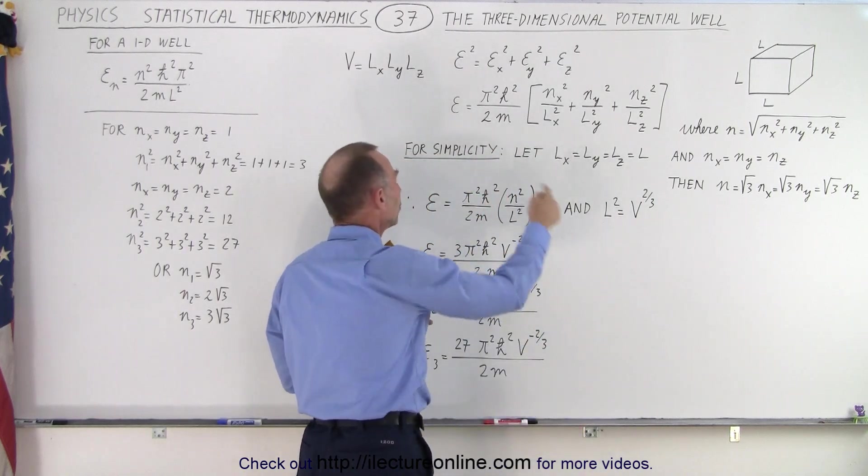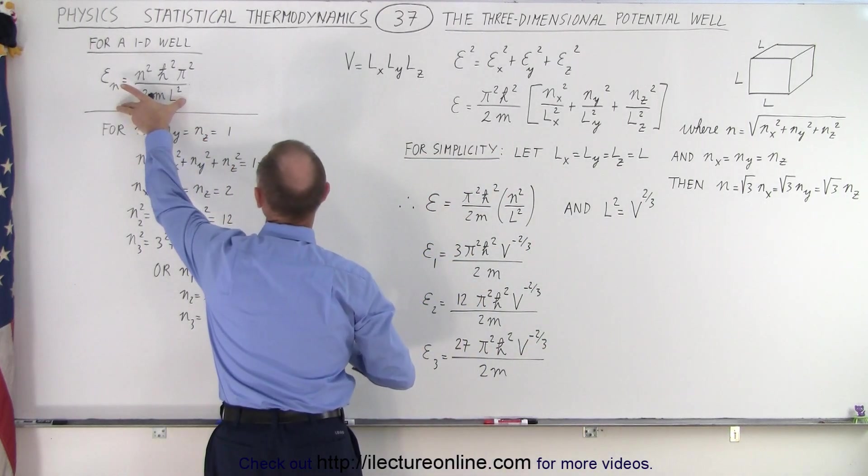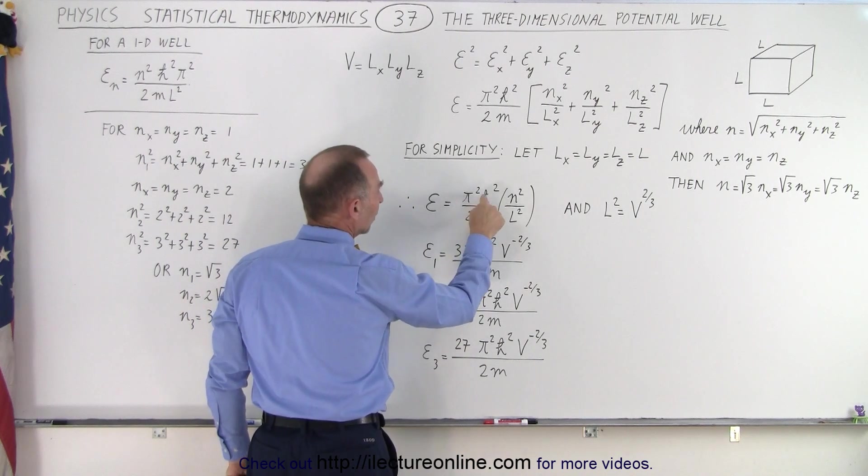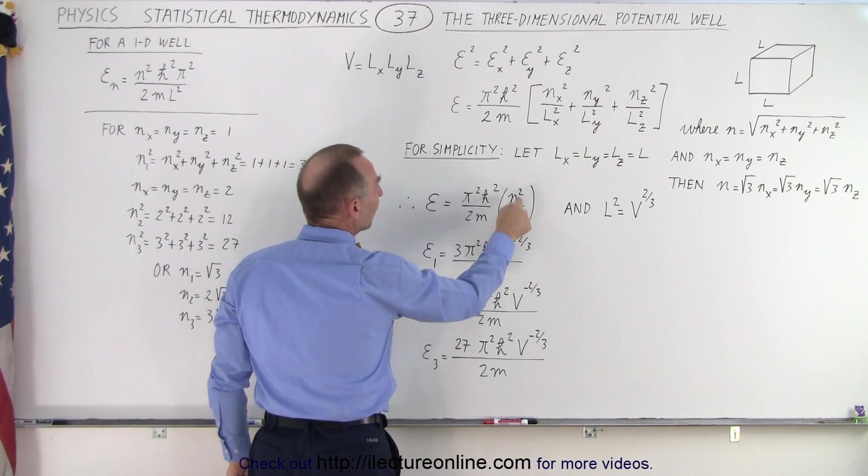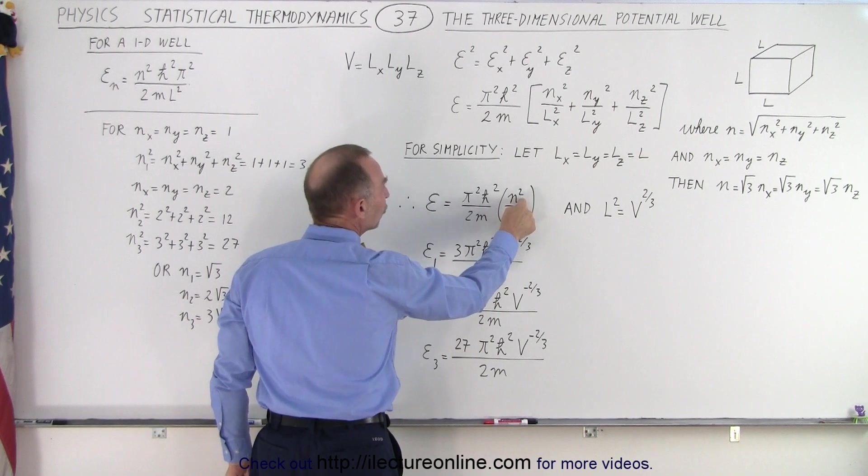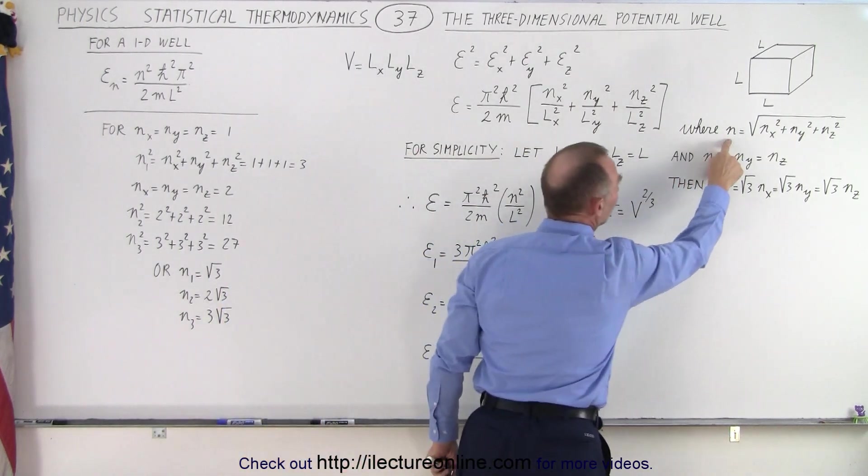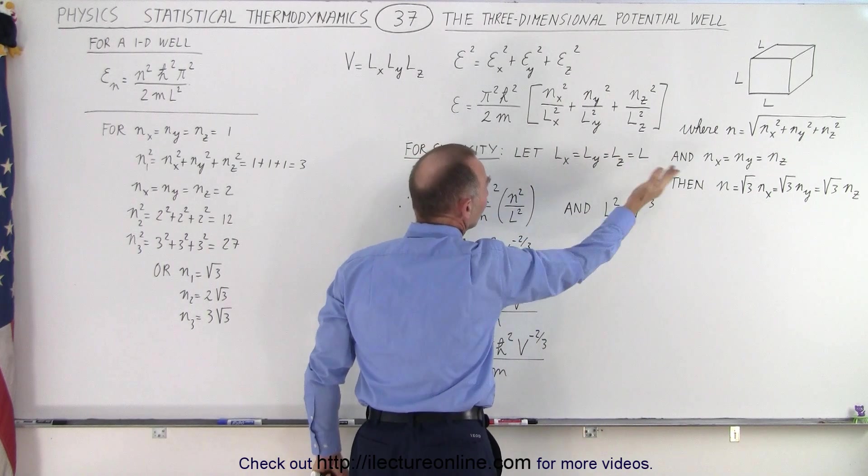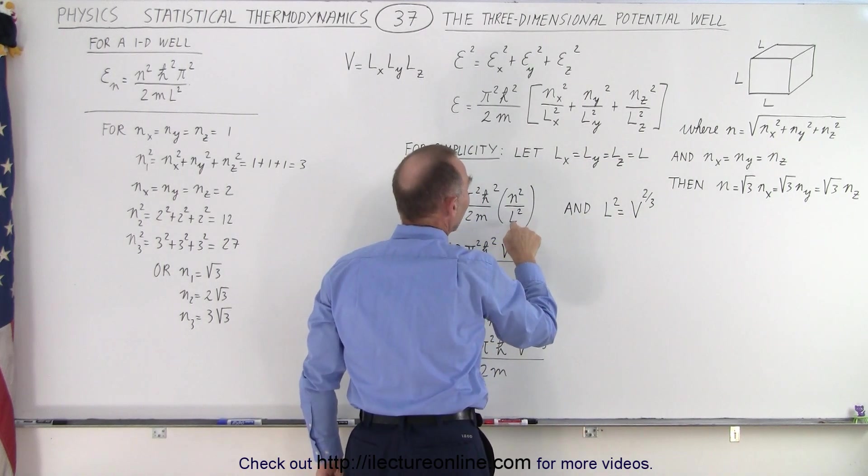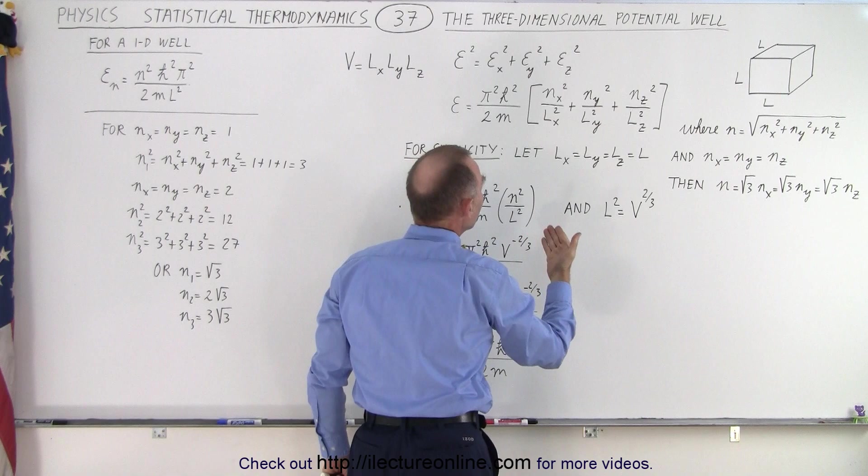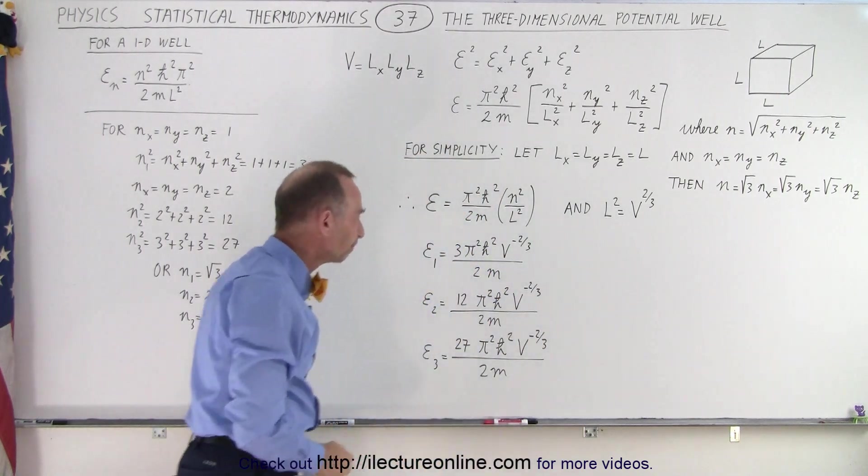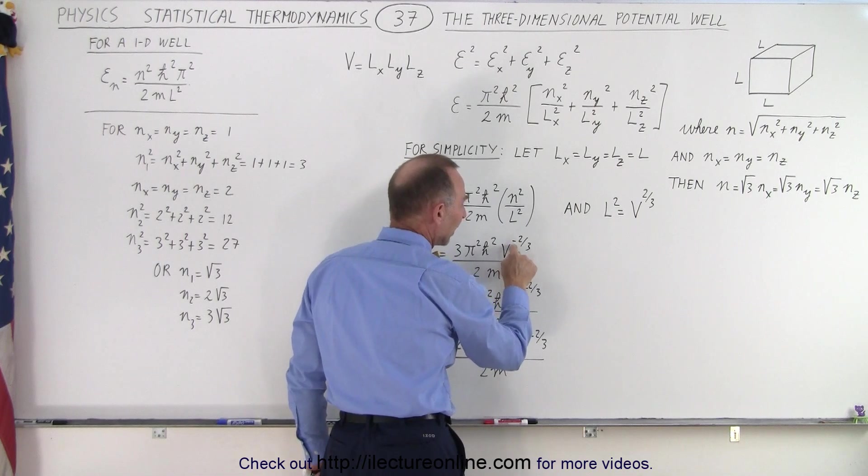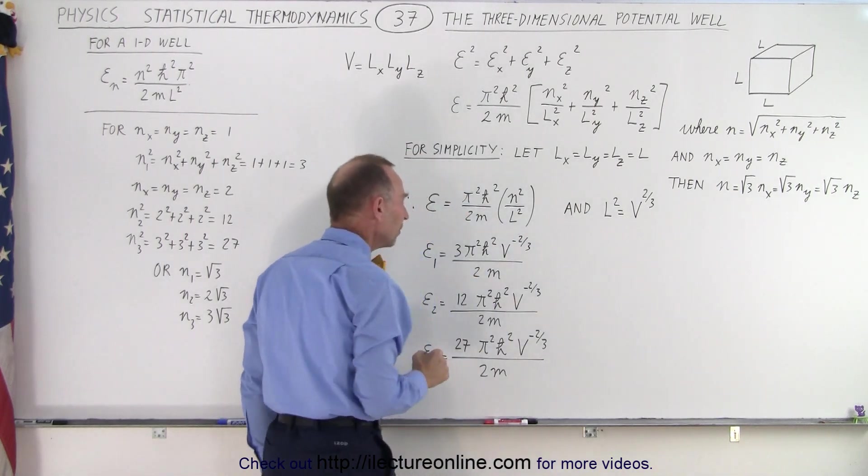And so now we can go ahead and rewrite this expression from the one-dimensional well to the three-dimensional box. We still have the pi squared h-bar squared over 2m, but in the numerator we'll have n squared. Notice that n squared will simply be the sum of the three. And of course the denominators will be the same, so we can add them. And of course l squared will now simply be the denominator squared. We can replace l squared in the denominator by v to the minus two-thirds, bring it to the top by this relationship. And now we need to find values for n squared.